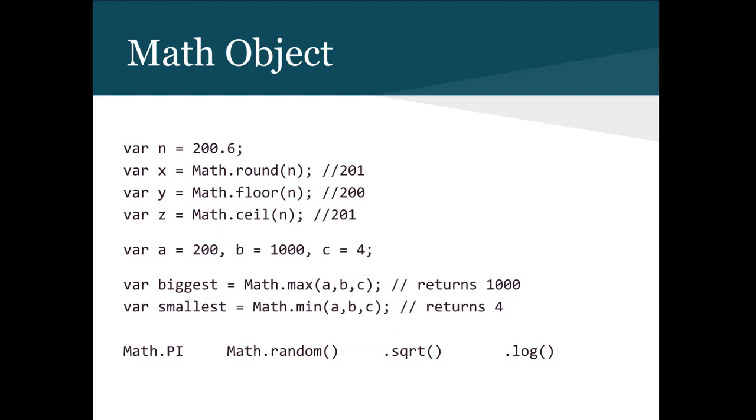The math object. Here we have some examples of methods used on the math object. While we have a whole day dedicated to math and its functions, it seemed appropriate to mention it alongside the number data type. The arguments passed to a math object must be a valid number data type. Strings will not work, not even number formatted strings. It's important to know the data type you are working with. In this example, we have a variable n with a value of 200.6. Math.round takes it to the nearest whole number. Math.floor rounds down to the nearest whole number, and Math.ceil does the same in the opposite direction, to the next whole number up.